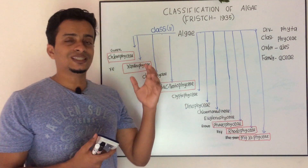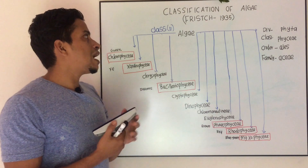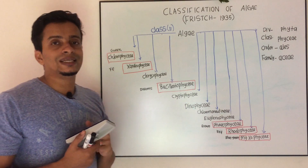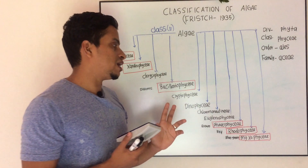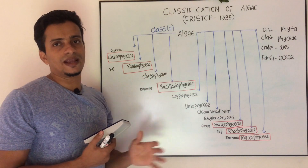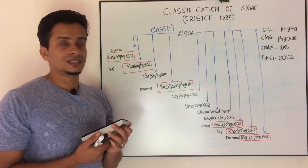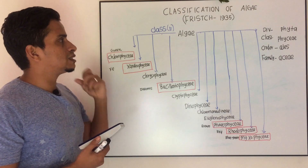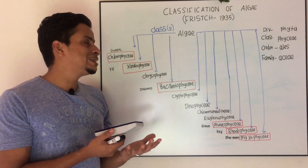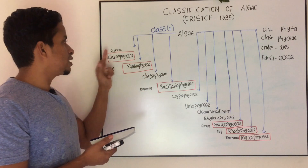According to Fritz, algae are classified into 11 major classes. We will study the same classes as part of classification. We have to study Green Algae, which is Chlorophyceae.